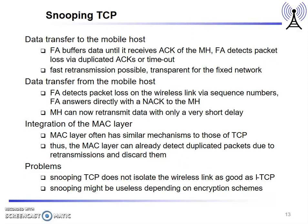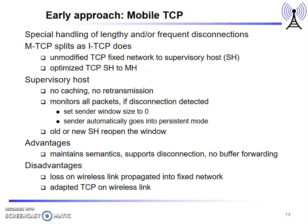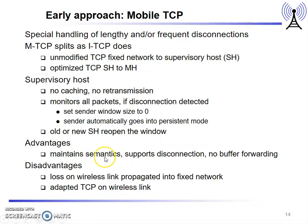Another approach is mobile TCP, which is similar to i-TCP but has a supervisory host connected to the standard TCP fixed network. This supervisory host does not have any cache, so it does not retransmit packets, but it monitors all packets. If any connection is disconnected, it detects this and sets the sender's window size to zero, causing the sender to automatically go into persistent mode. The advantages are that it maintains end-to-end semantics, supports disconnection, and requires no buffer forwarding. The disadvantage is that loss on the wireless link is propagated into the fixed network.